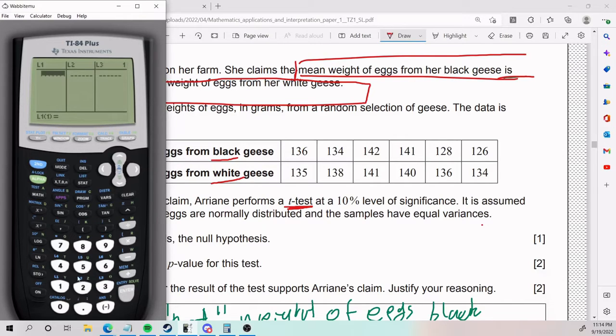So the first list is going to be the black geese, so it's 136, 134, the one on top of course, 142, 141, 128, 126. For the next one, we got 135, 138, 141, 140, 136, 134. You know what's going on at this point.